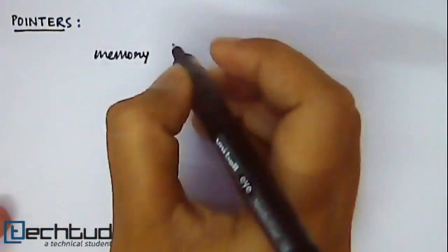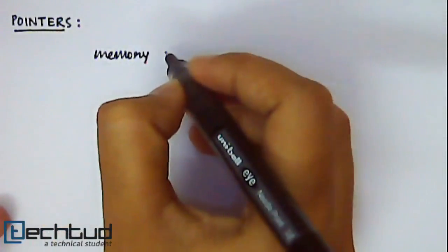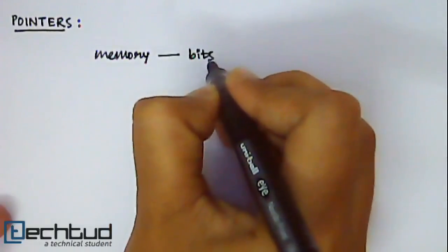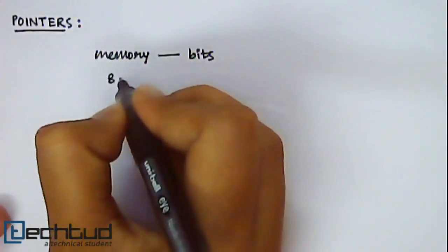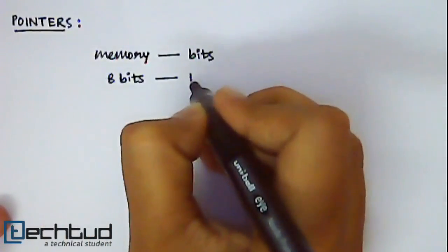So the memory of your computer system is divided into small chunks of data which is called bits. 8 such consecutive bits are known together as 1 byte.